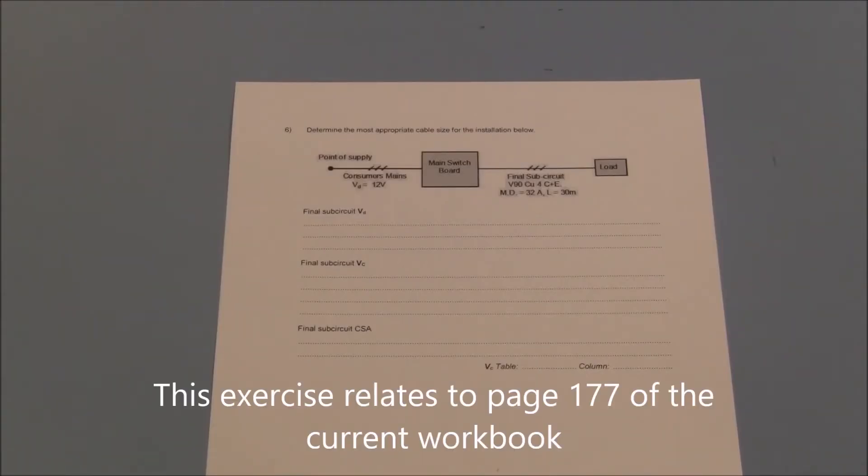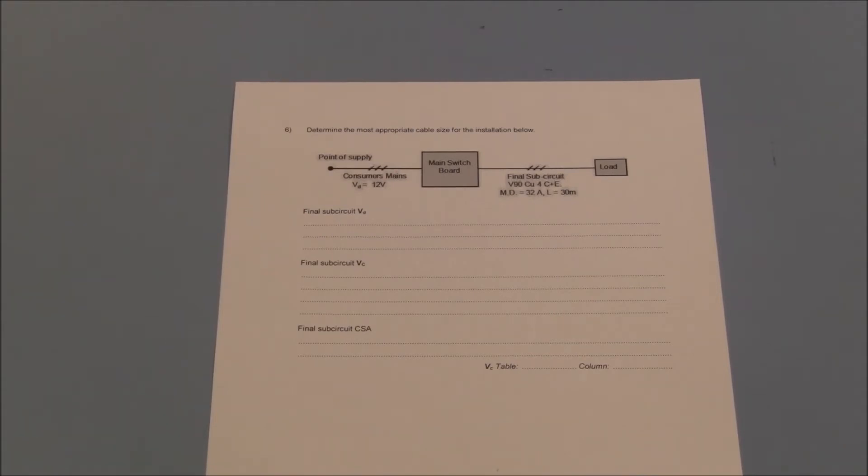AS3008 states voltage drop shall be such that it does not exceed 5% between a point of supply and any other point within the electrical installation. In a three-phase installation such as this, that value is no greater than 20 volts.